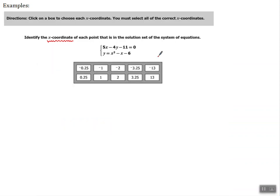And it's really that simple. 3.25 is right here. So I'm going to select that one. And the other X coordinate was negative 1. So I'm going to select that one. And we have found the X coordinates to the solutions of this system. Great.